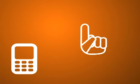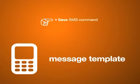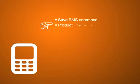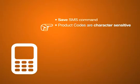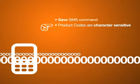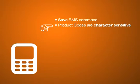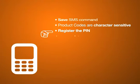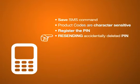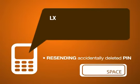Important loading tips: Save your SMS command as a message template so retyping will be much easier. Product codes are character sensitive — letters and numbers must not be interchanged. For example, the letter O must not be replaced with the number zero and vice versa. Customers who buy e-pins must register the pin they receive using procedures required by their telco operator. You can help a customer who accidentally deletes their e-pin by resending the pin to their cell phone.